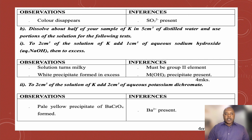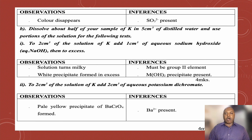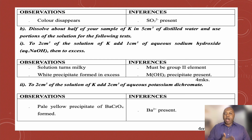Test B2: to 2 cm³ of solution of K, add 2 cm³ of aqueous potassium dichromate. My observation was a pale yellow precipitate of barium chromate was formed. In trying to identify the cations that tally with my observations, I realized that barium ion is present.